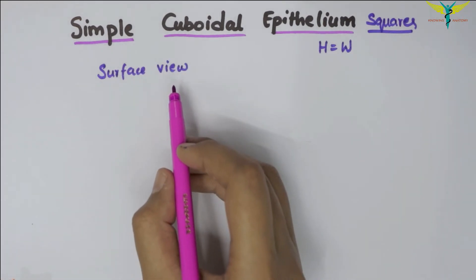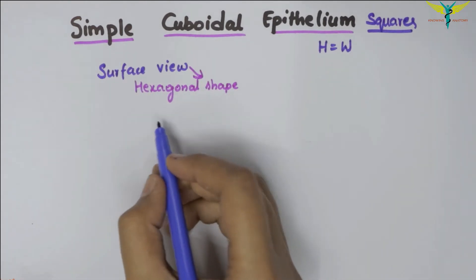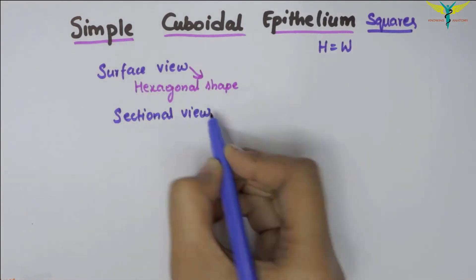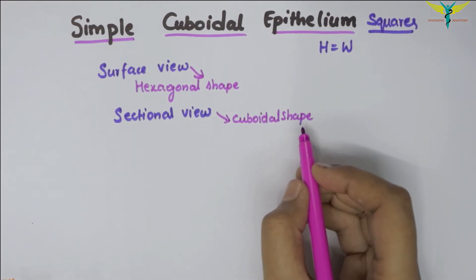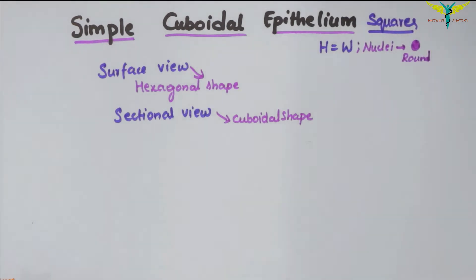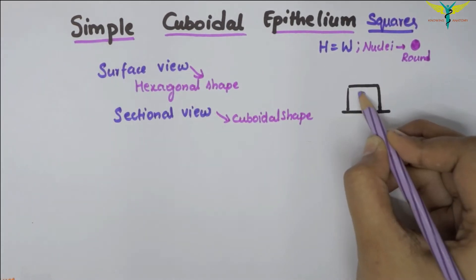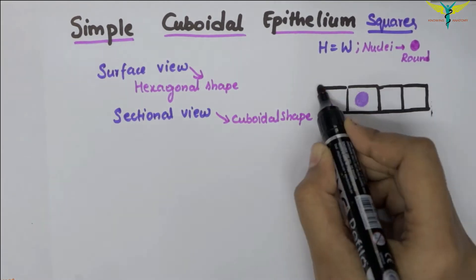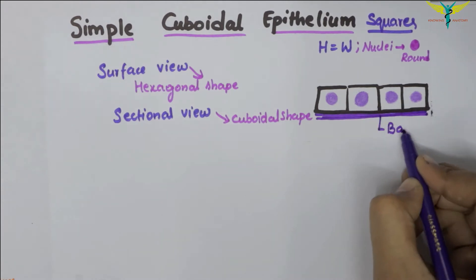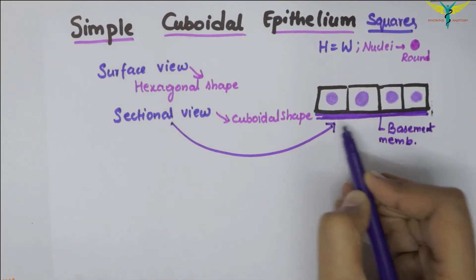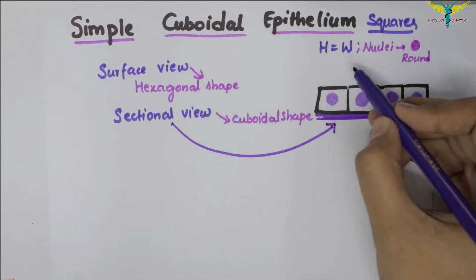In the surface view, the cuboidal cells are seen in hexagonal shape, and in the sectional view, the cuboidal cells appear in cuboidal shape. Their nuclei are usually rounded. So this is the cuboidal cell with a round nucleus. This is the basement membrane.